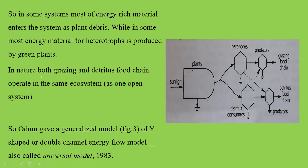So in nature, both grazing and the detritus food chains operate in the same ecosystem as one open system. This is very important to remember.